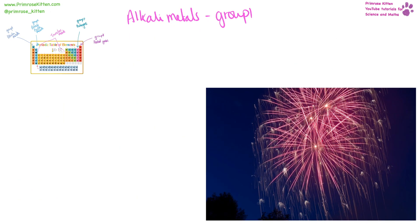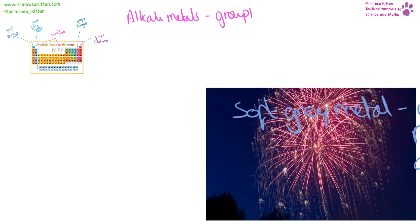Alkali metals react very violently with water, and this is where you're going to see flames and different colors — this is one of the things used to make different colors in fireworks. The lovely lilac flame from potassium can be used in fireworks. These are soft grey metals which are easily cut, and they need to be kept in oil so they don't react with oxygen or water in the air, because it's a very, very violent reaction.